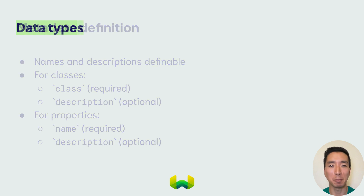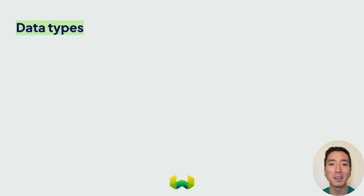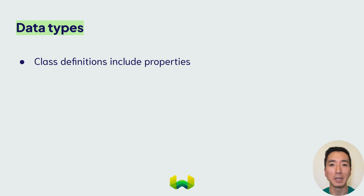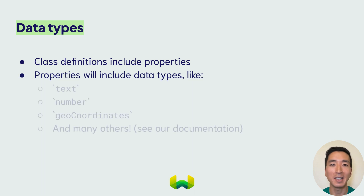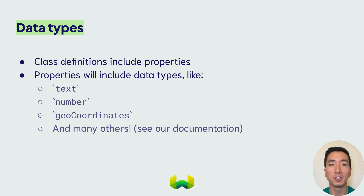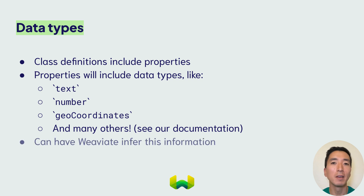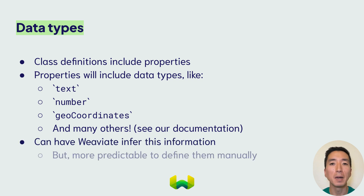Now let's talk about properties with data types. Your class definitions will include properties to populate with data, and each of these properties needs to have a specific data type, like text, number, geocoordinates, boolean, and so on. If you leave them out, VV8 will infer them, but we do recommend that you specify them for more predictable results.